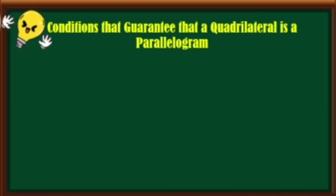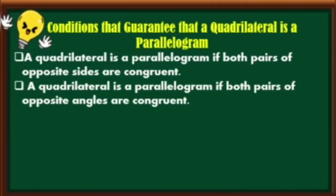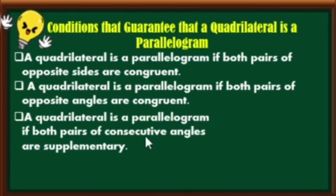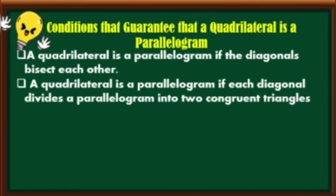Let us now go back to the conditions that guarantee that a quadrilateral is a parallelogram. First and second: both pairs of opposite sides and opposite angles are congruent. Third: both pairs of consecutive angles are supplementary. Fourth: the diagonals bisect each other. And last: each diagonal divides a parallelogram into two congruent triangles. That is all for this episode. Thank you for watching.